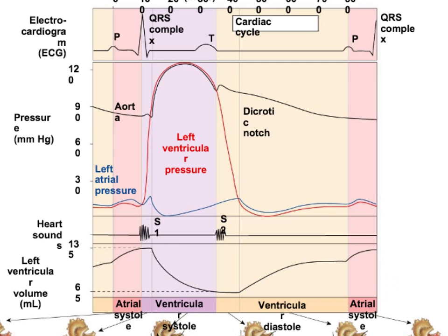Looking at the volume curve: when the atria contract and push blood into the ventricle, ventricular volume goes up. During isovolumic contraction, there's a plateau — the same volume. When the aortic valve opens and blood is pushed into the aorta, ventricular volume decreases dramatically. During isovolumic relaxation, volume stays about the same, then once pressure drops below atrial pressure, passive filling occurs and volume rises again.